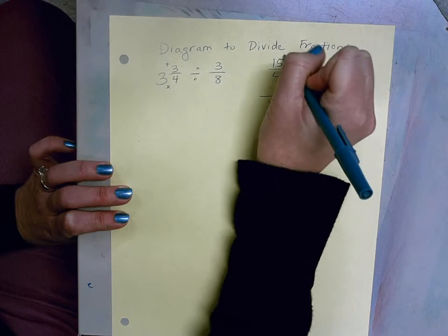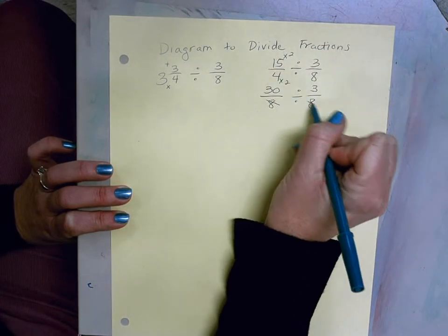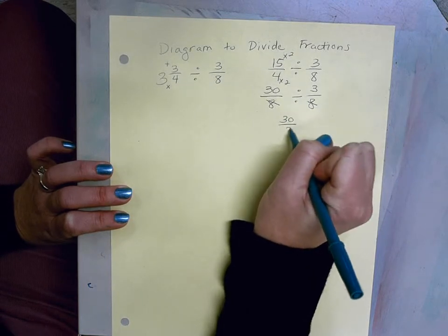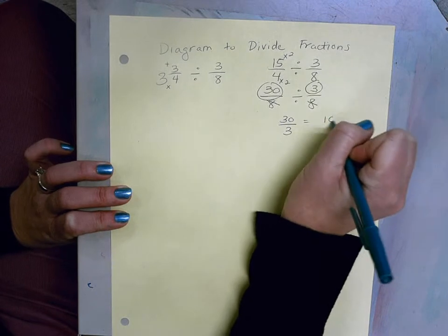4 times 2 is 8 and 15 times 2 is 30. Since 8 divided by 8 will give us 1, we're left with 30 divided by 3, or two numerators, which of course we can simplify to 10.